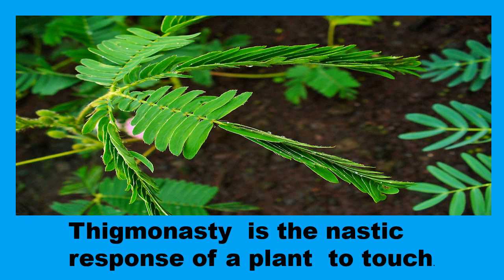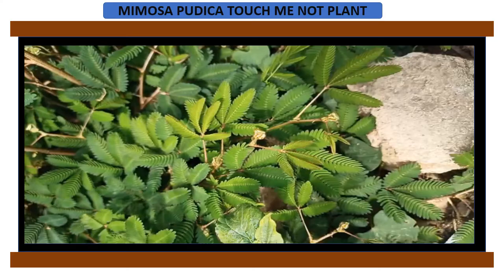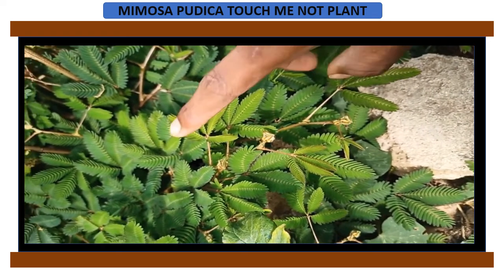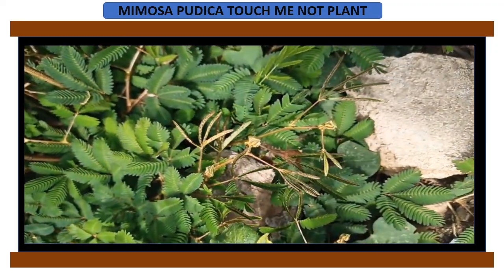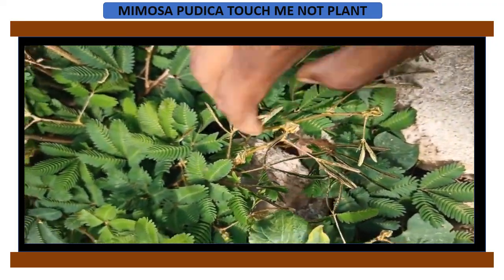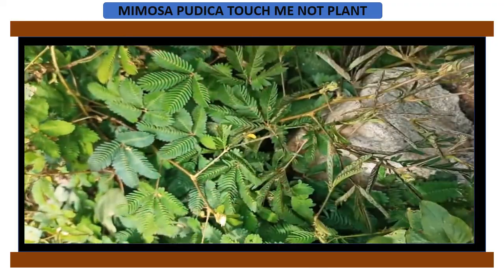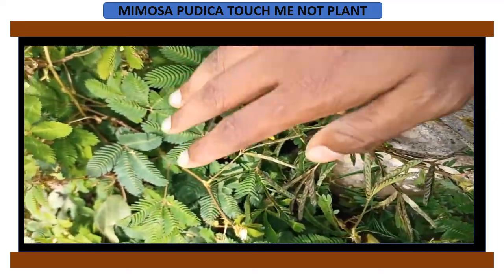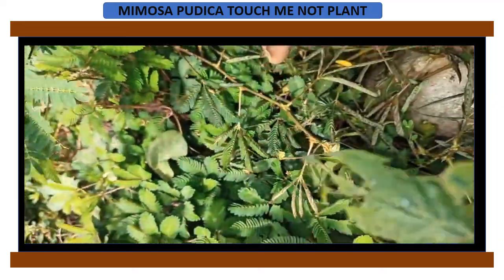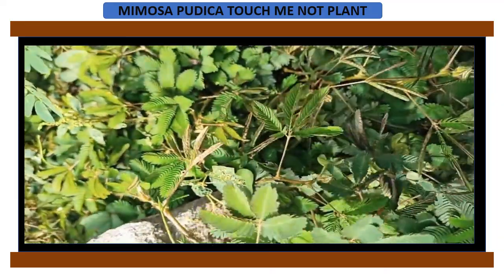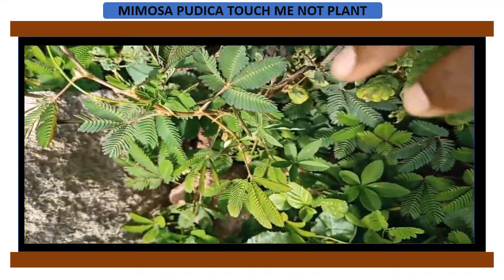The reason behind this is that Mimosa pudica leaves have pad-like swellings at the base, called pulvini. These cells contain a lot of water and large intercellular spaces. Due to water pressure, pulvini hold the leaf erect.